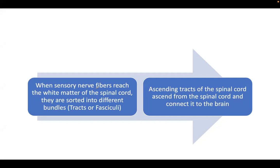When sensory fibers reach the white matter of the spinal cord, they will be sorted into different fiber tracts that we call tracts or fasciculi — different bundles. These different bundles of sensory nerve fibers are known as tracts or fasciculi. Always remember these are ascending tracts from the spinal cord, which ascend going upwards, connecting to the brain.